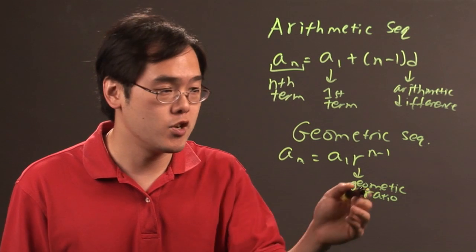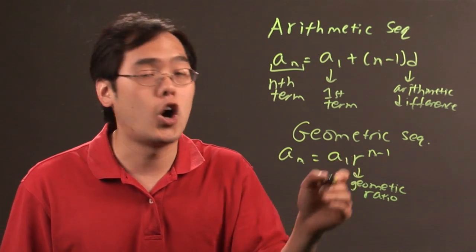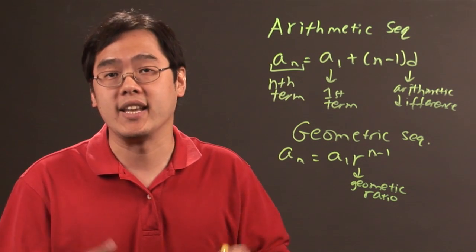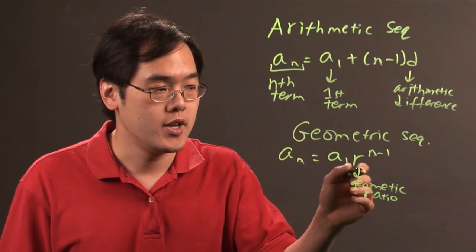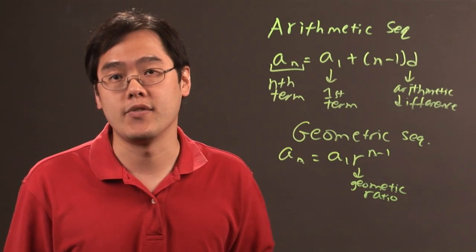For example, for geometric ratio, if the terms are separated by multiplication of 4, then r is going to be 4. Or, if the terms are separated by dividing by 10, for example, then r would be 1/10th because you're actually multiplying by 1/10th if you're dividing by 10.